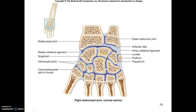The articular cartilage between the carpals forms the intercarpal joints. The radiocarpal joint has a synovial cavity encompassing a space lined by the articular surface of the radius, the scaphoid, the lunate, and the triquetrum. The pisiform and the ulna are both excluded from the radiocarpal joint — the ulna does not contribute to the radiocarpal joint.